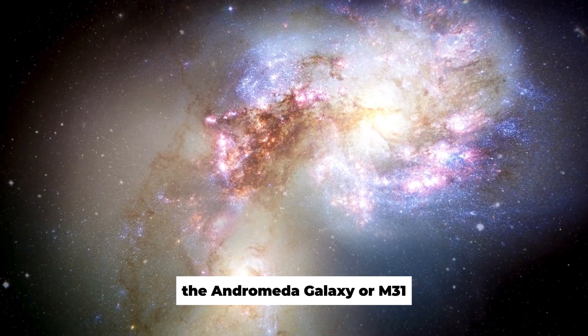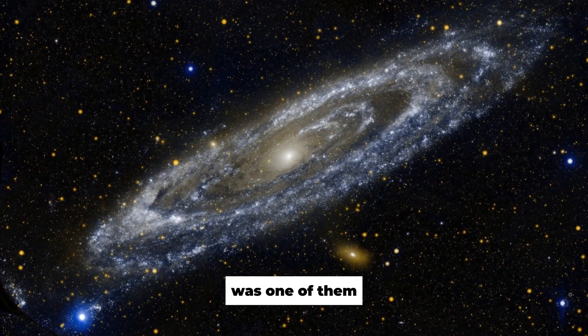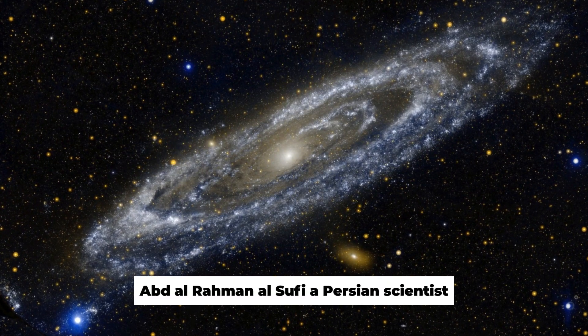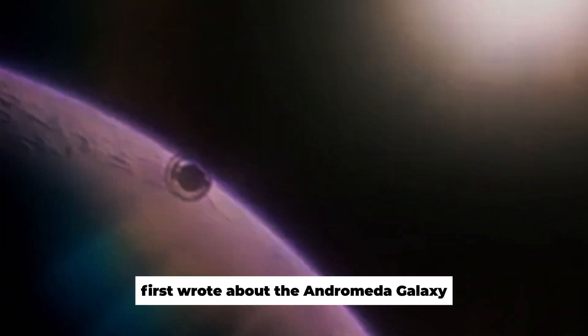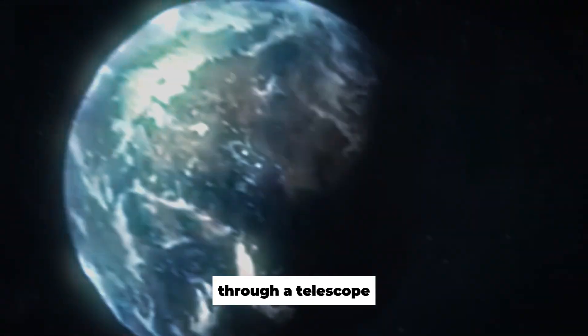It was Edwin who noticed that these moving objects in space were galaxies other than the Milky Way. The Andromeda galaxy, or M31, was one of them. Abd al-Rahman al-Sufi, a Persian scientist, first wrote about the Andromeda galaxy around the year 1050.